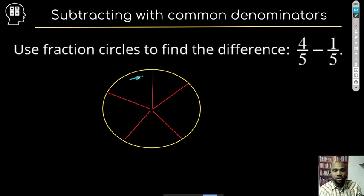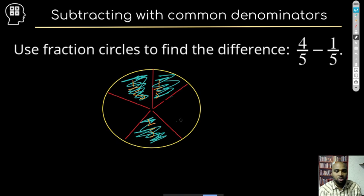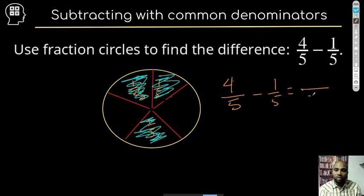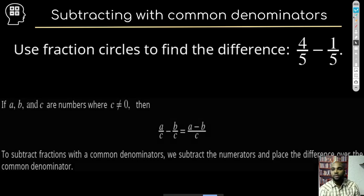There we go — that's our circle divided into fifths. We have four-fifths, so let's shade in one-fifth, two-fifths, three-fifths, and four-fifths. Now, if I want to subtract one-fifth — each one of these represents one-fifth and we want to take one away — I'm going to erase one of these. Now we have one, two, three — three-fifths left. That makes sense: four-fifths minus one-fifth. Just as in addition, we keep the denominator the same and subtract our numerators, leaving us three over five.